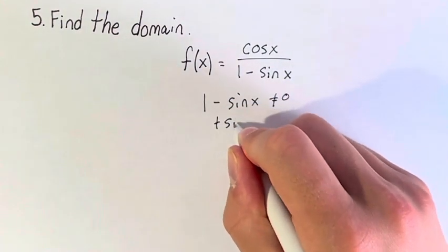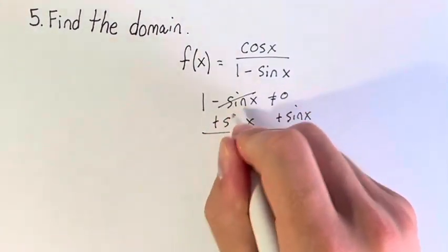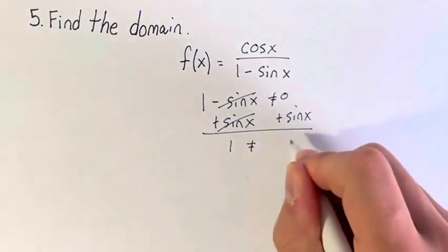Solving for sine or solving for x itself, not even solving for sine of x. We get 1 cannot be equal to sine of x.